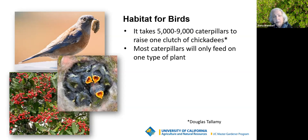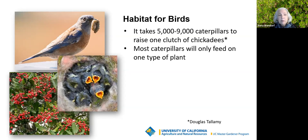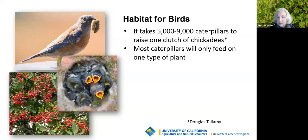Another way we can support our native birds is to provide berries that are healthy for them. Many imported berries have the wrong proportion of carbohydrates to fats and will not support birds when they're migrating or raising their babies. We need to support them with healthy native berries — the toyon berries shown here are one example.